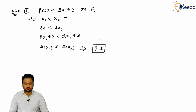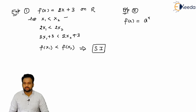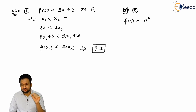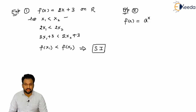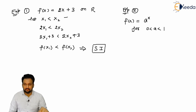Therefore, f of x equal to 2x plus 3 is a strictly increasing function — at a smaller point it gives a smaller value, and at a larger point it gives the largest value. This function is strictly increasing.